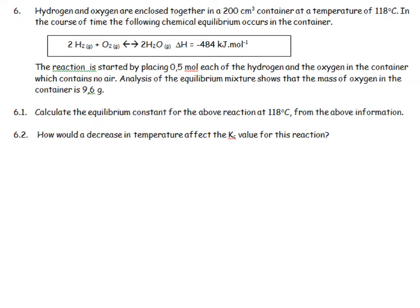Hydrogen and oxygen are enclosed together in a 200 cm³ container at a certain temperature. It's an exothermic reaction. They want us to calculate Kc. The volume is 0.2 dm³, the ratio is 2:1:2, starting with 0.5 moles of hydrogen and oxygen. Analysis of the equilibrium mixture shows the mass of oxygen is 9.6 g.